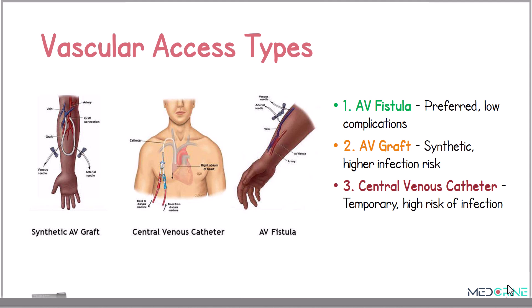We have three common vascular access types. An arteriovenous fistula, which is usually the preferred route with low complications. An arteriovenous graft, where we use a synthetic graft; however, this method has a higher infection risk. And lastly, we have a central venous catheter that we use in temporary cases, and it is associated with a high risk of infections.